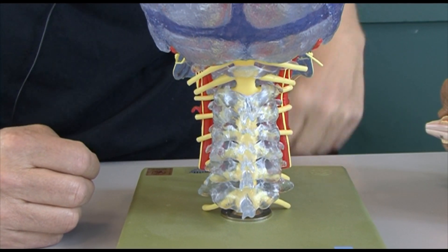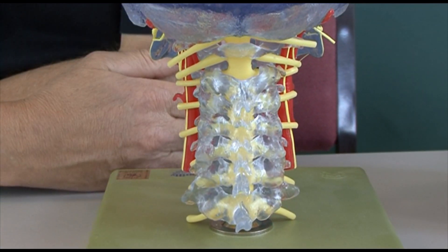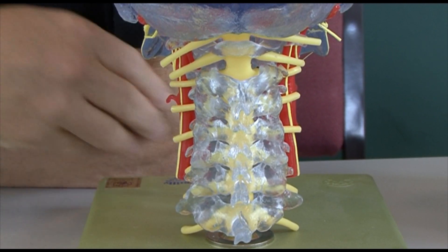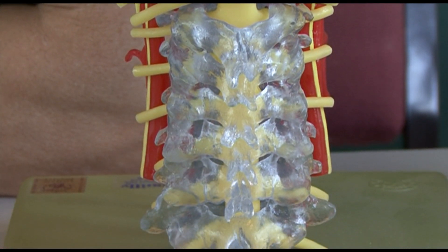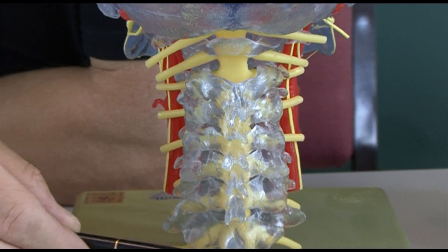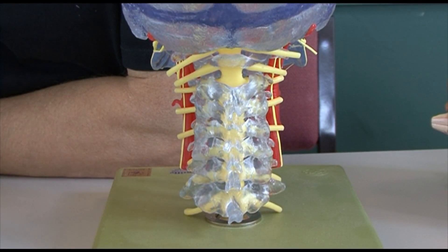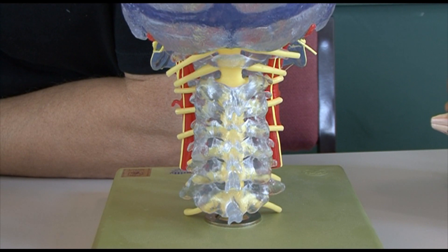We see the spinal cord going down through the vertebrae, protected by the vertebrae. But of course this model also shows why it's so important to look after the cervical spine if a patient's been traumatized, because the spinal cord is going through the vertebrae. If the spinal cord were to be transected at one of these levels, the patient would be completely paralyzed below the level of the injury. Indeed, with high cervical fractures the patient would be unable to breathe.